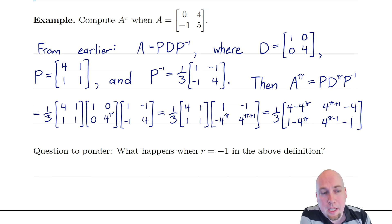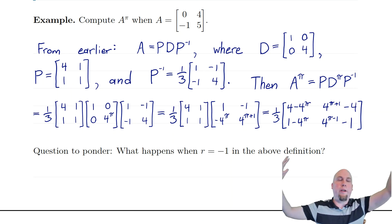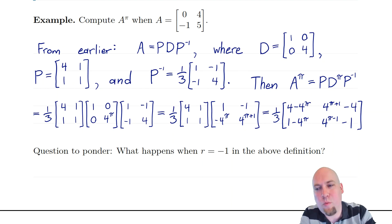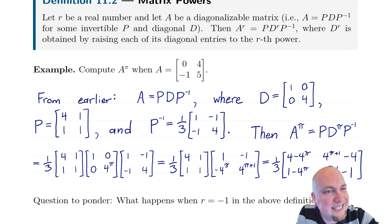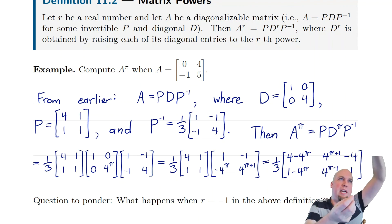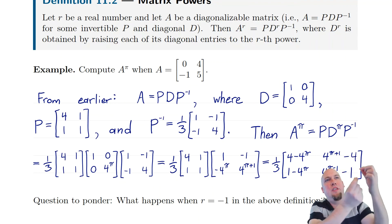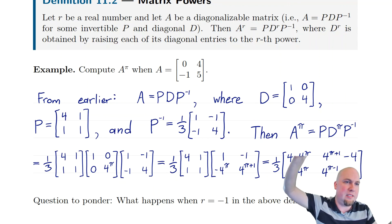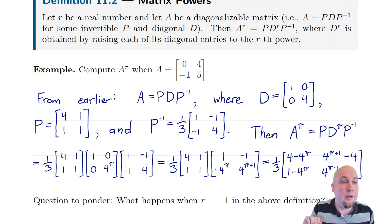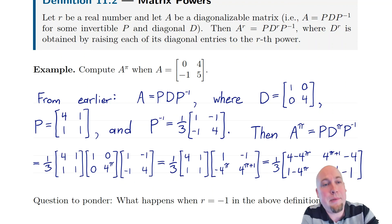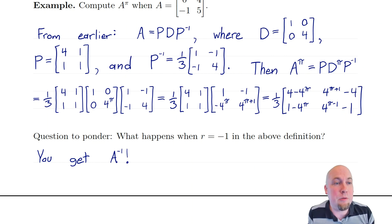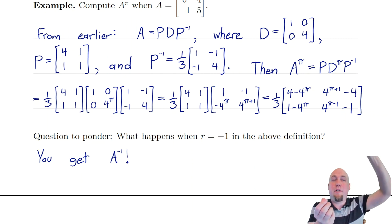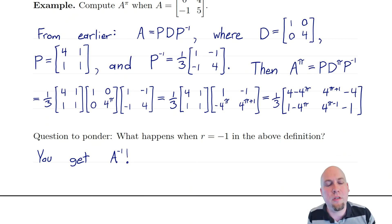One thing worth thinking about: what happens if you plug R = −1 into this definition? You get P · D^(−1) · P inverse, where D^(−1) means one divided by each diagonal entry — one divided by each of the eigenvalues. It turns out when you do that you get exactly the inverse of the matrix. So A to the power minus one computed via this formula really is the inverse of the matrix. This justifies the notation we've been using for the past five or six weeks: A to the power minus one really is A inverse.